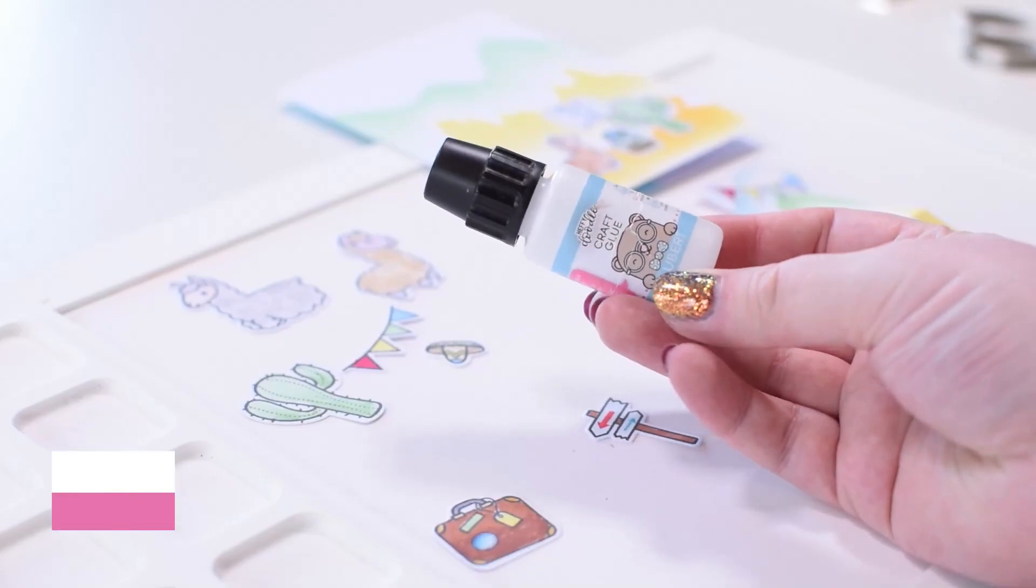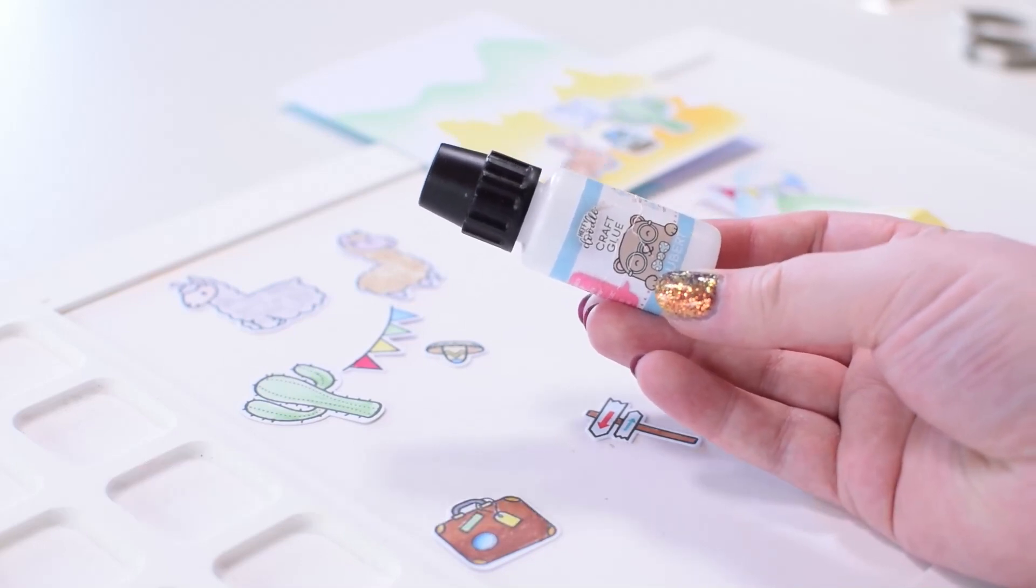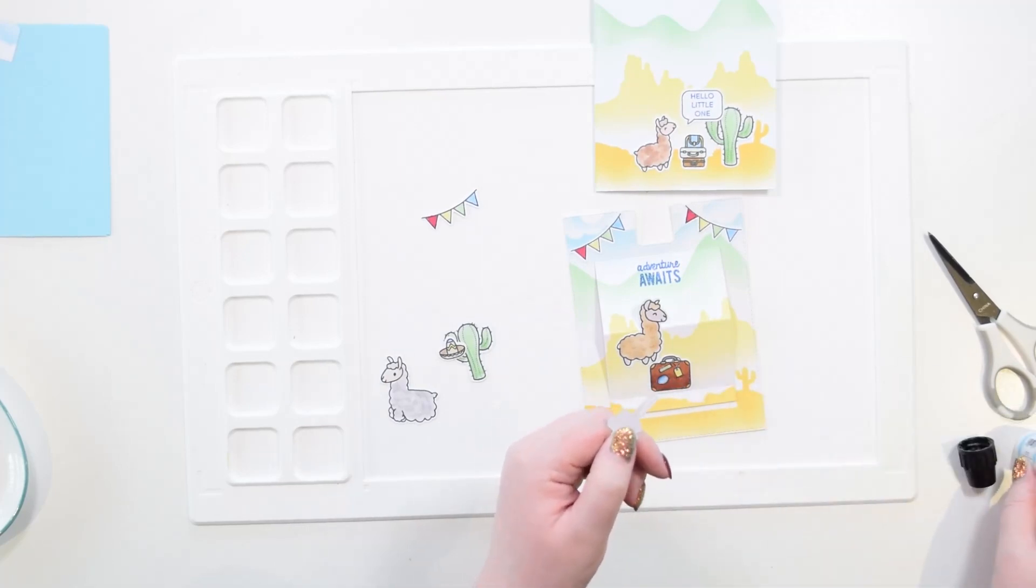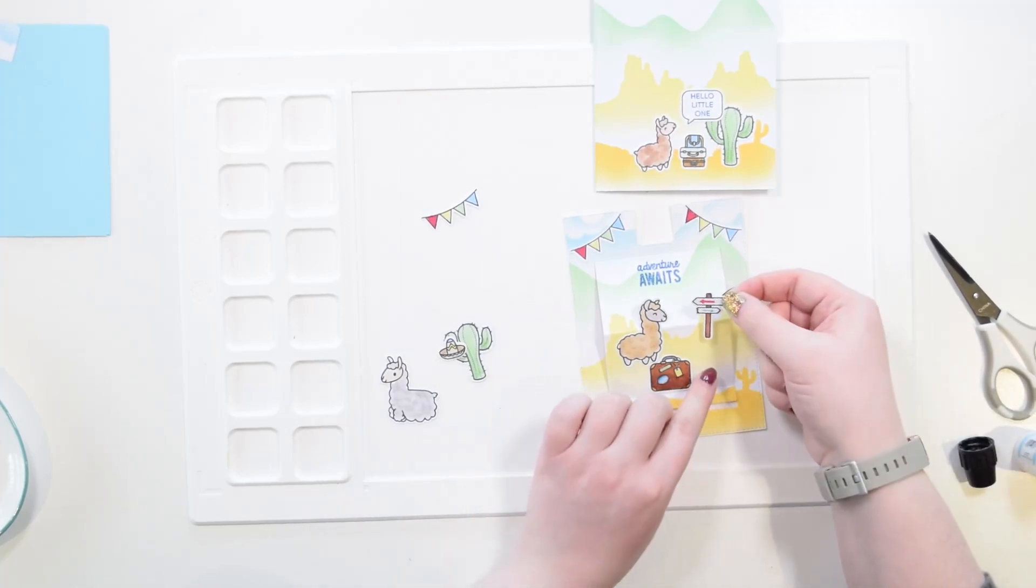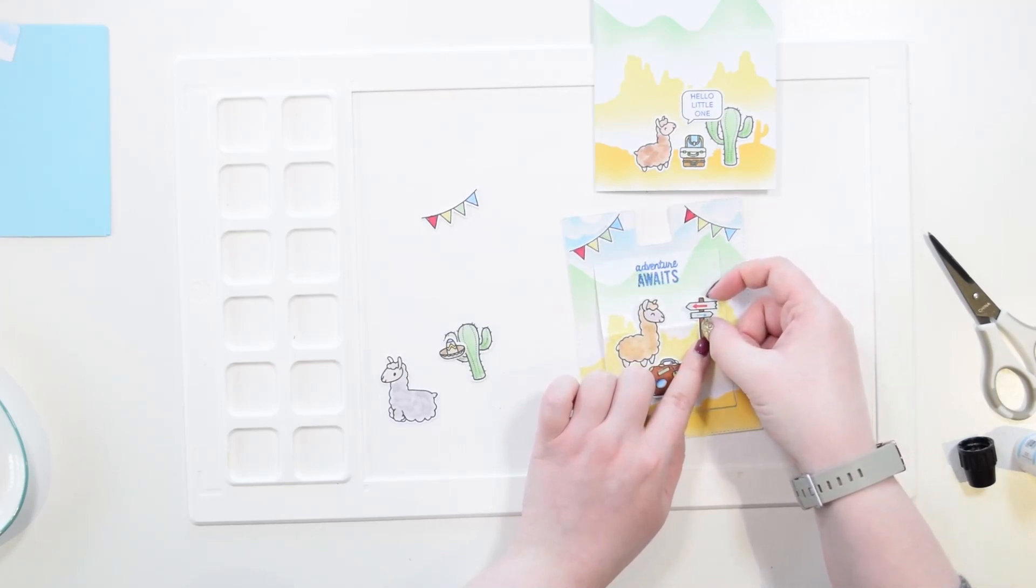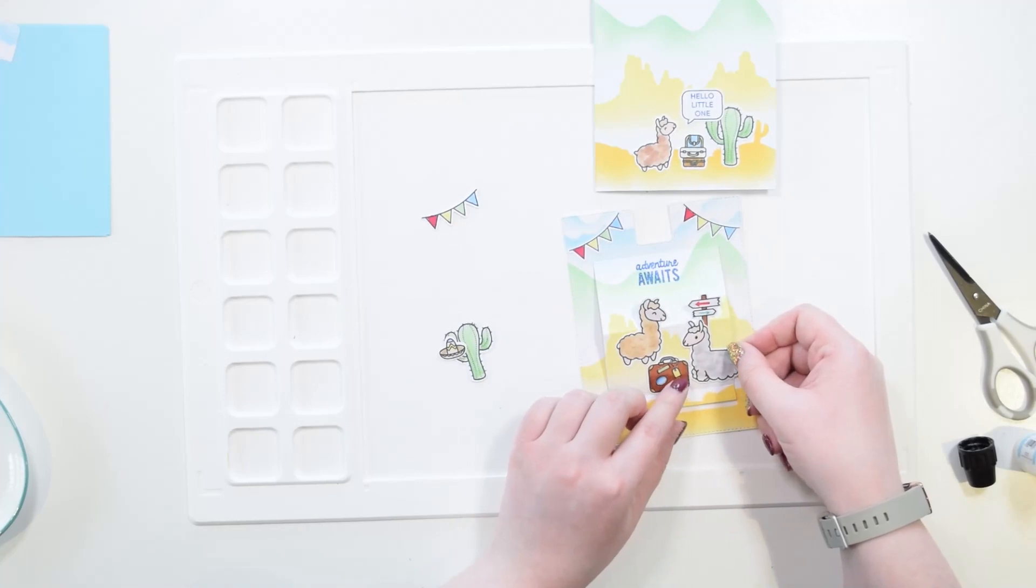My adhesive of choice today was the Gluebert craft glue. He is so cute! But just make sure if you're using wet adhesive that he's dry before you get cracking with your slider panels, because you do not want glue where there shouldn't be glue, otherwise your mechanism will not work as it should.